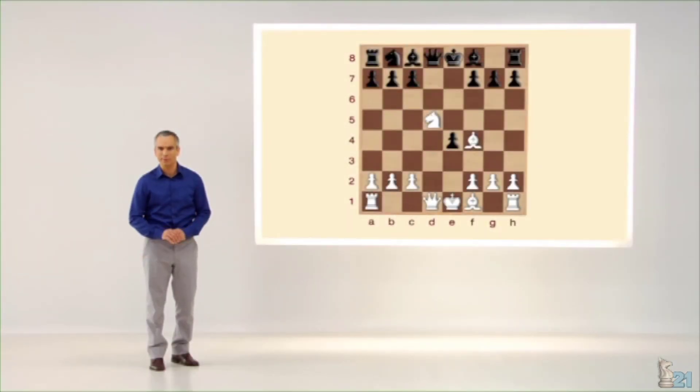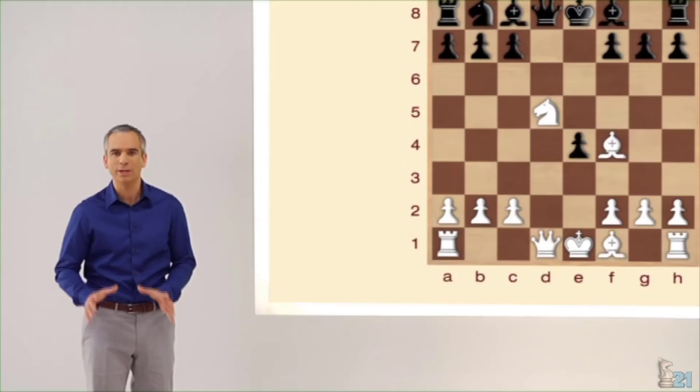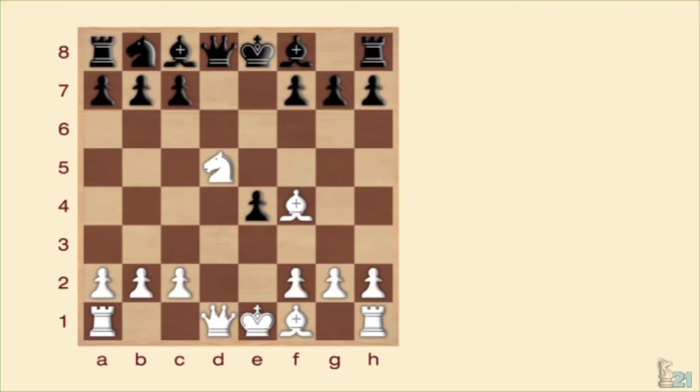Esta vez se trata de un problema de defensa. Jugamos con negras y el blanco nos amenaza con un jaque doble por la acción combinada de dos piezas. La pregunta es obvia. ¿Cómo nos defendemos? Una vez más, tenemos de dos a diez minutos para tratar de dar con la respuesta.